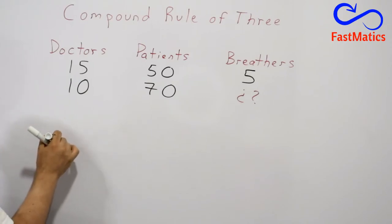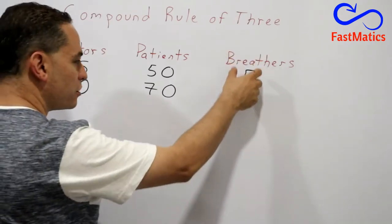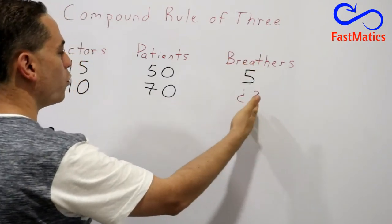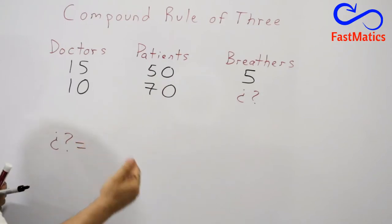To calculate it, you write the unknown value. And pay attention, the column where you have the unknown value is going to be compared with the other columns to see if you have a direct rule of three. Remember one thing: